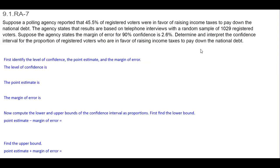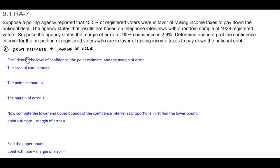First, we need to identify what it is that we're looking for. We want to find the point estimate. When you take the point estimate, what you're going to do is plus and minus the margin of error. We want to identify the level of confidence, the point estimate, and the margin of error.